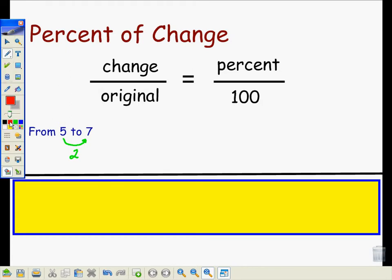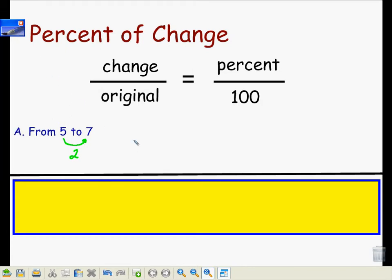So with that in mind, we can calculate 2 over the original amount, which is 5, is equal to the percent, which we don't know, so we'll use a variable. Let's use the letter P over 100.